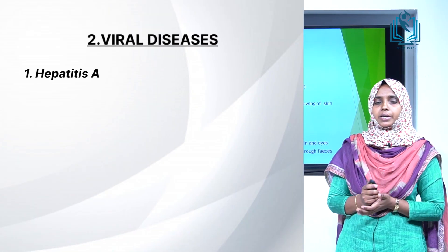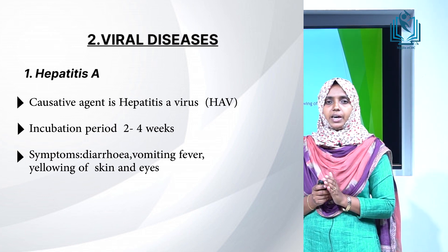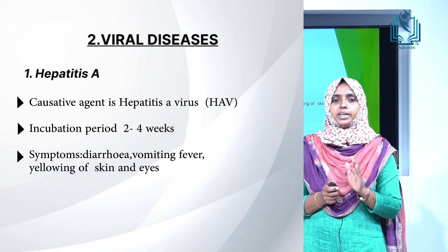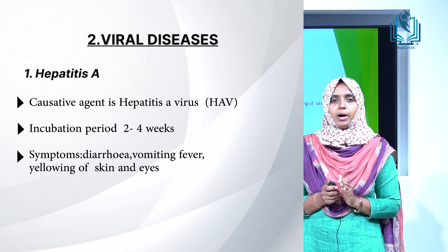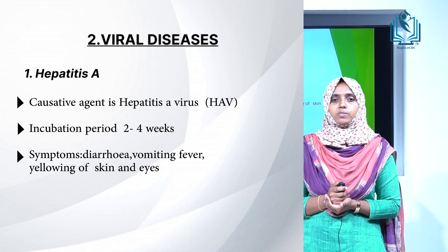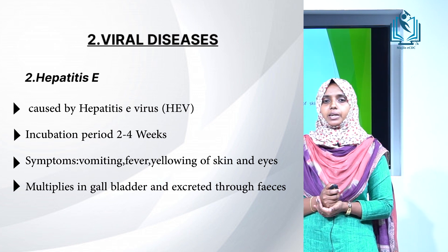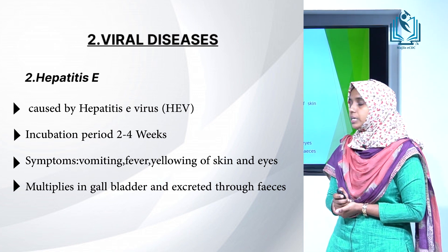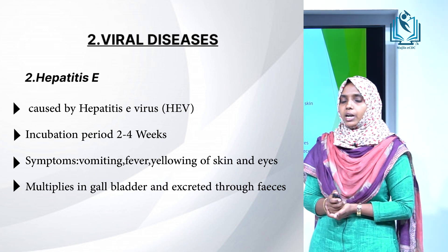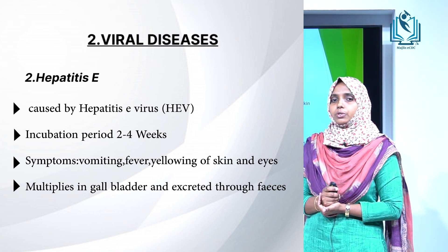Viral diseases include hepatitis A and hepatitis E. Hepatitis A is caused by hepatitis A virus with an incubation period of 2 to 4 weeks, mainly affecting the gallbladder. Symptoms include diarrhea, vomiting, fever, and yellowing of skin and eyes. Hepatitis E is caused by hepatitis E virus with an incubation period of 2 to 4 weeks; symptoms include vomiting, fever, and yellowing of skin and eyes. The virus multiplies in the gallbladder and is excreted through feces.